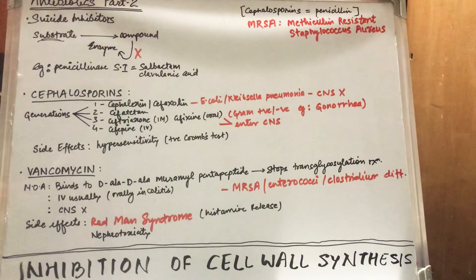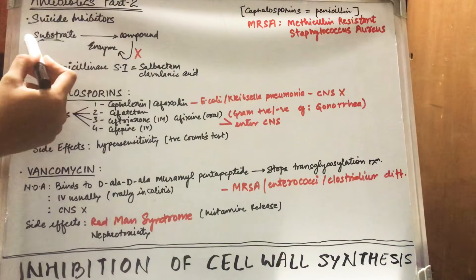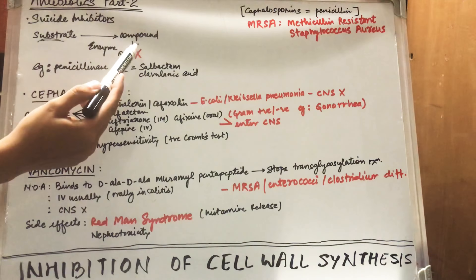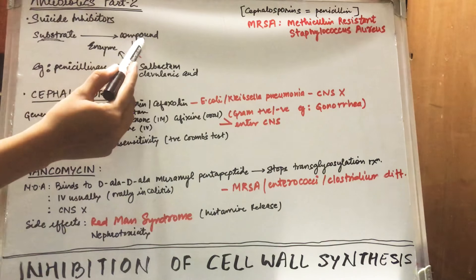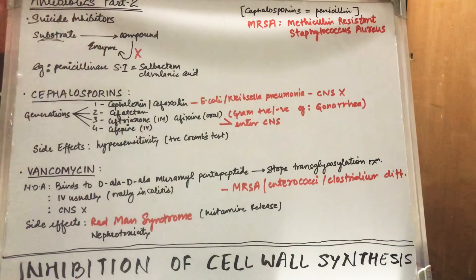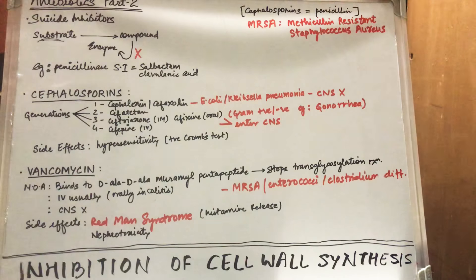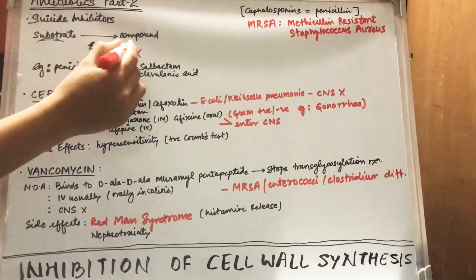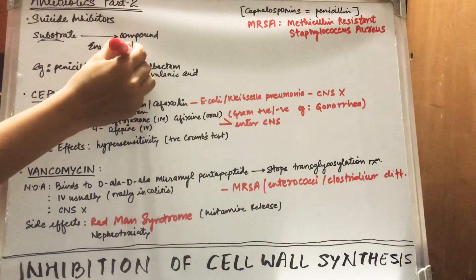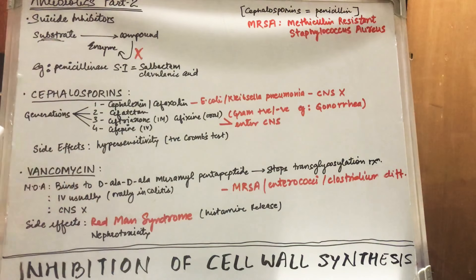Let's start with suicide inhibitors first. Normally an enzyme is required to metabolize a substrate into a compound, but sometimes this compound irreversibly inhibits the enzyme — so the compound is essentially planning its own suicide, like it wants to kill itself. This is the concept behind suicide inhibitors.